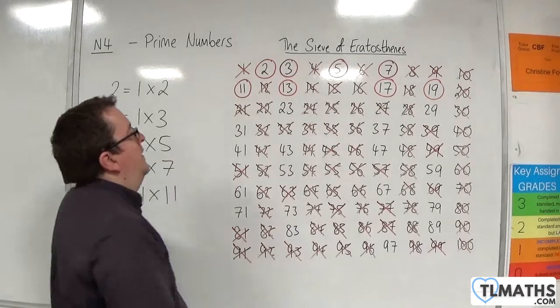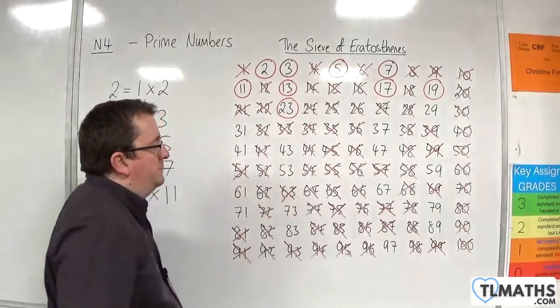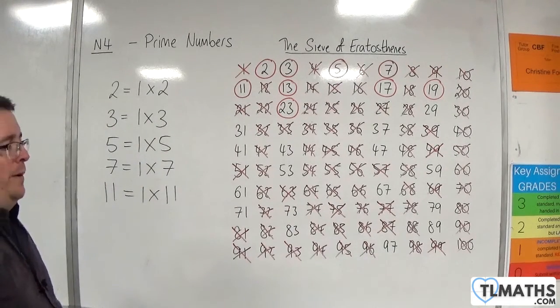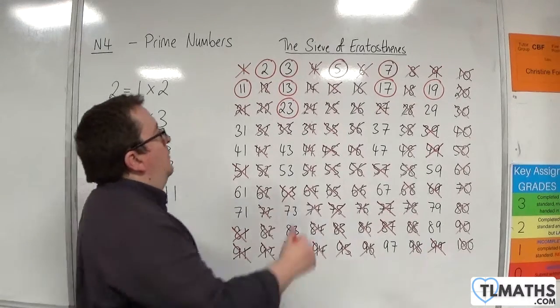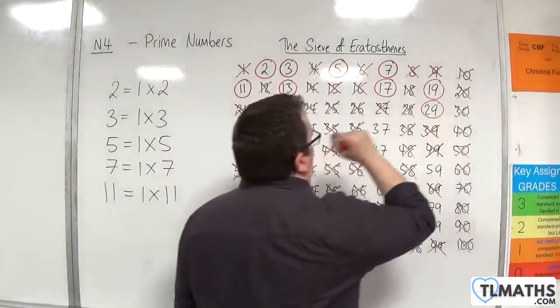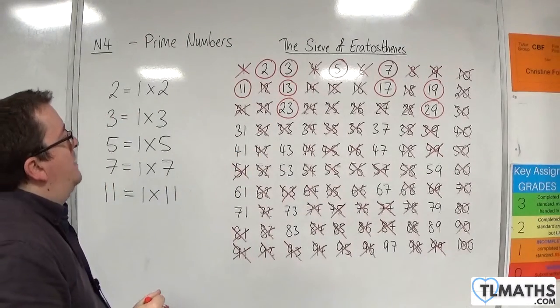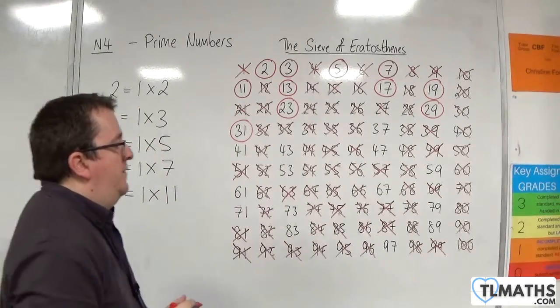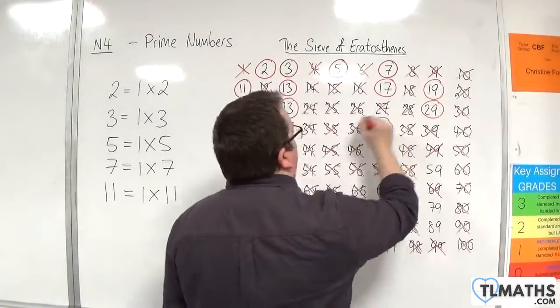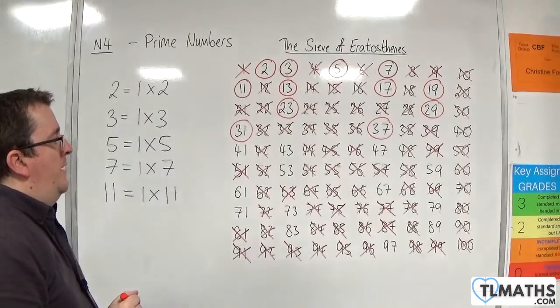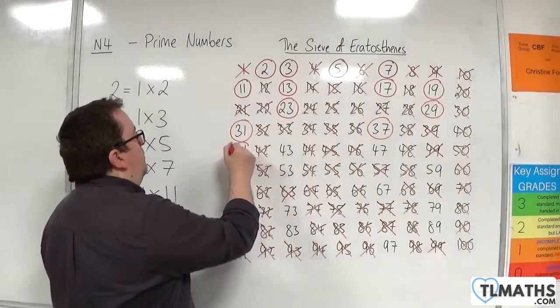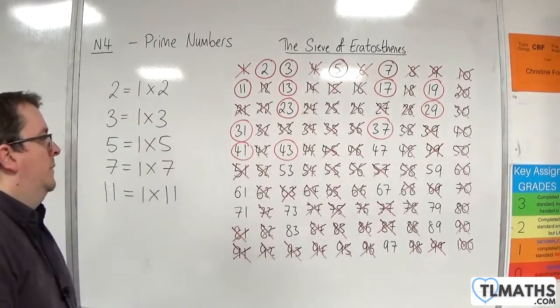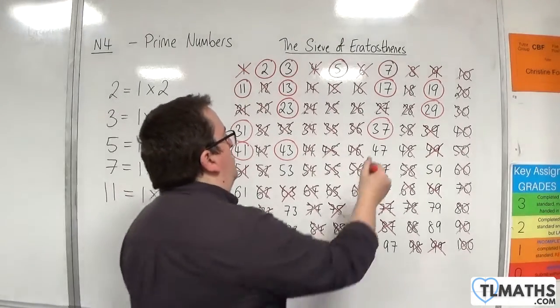So the next one in the list is twenty-three. So that is prime and we can keep on going in this vein. So twenty-nine is prime, then thirty-one is prime, thirty-seven is prime, then next one is forty-one, that's prime, and forty-three is prime, and forty-seven is prime.